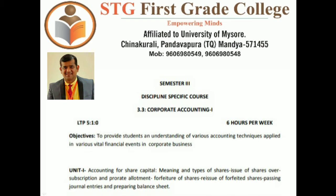We have to pass journal entries for all the situations highlighted in this unit — for example, the issue of shares, and in cases of over subscription and pro rata allotment, which will be explained in coming classes. Forfeiture of shares is the cancellation of shares due to non-payment of call money. Reissue of forfeited shares is when those cancelled shares are reissued to somebody else, requiring journal entries. We also need to prepare a balance sheet.